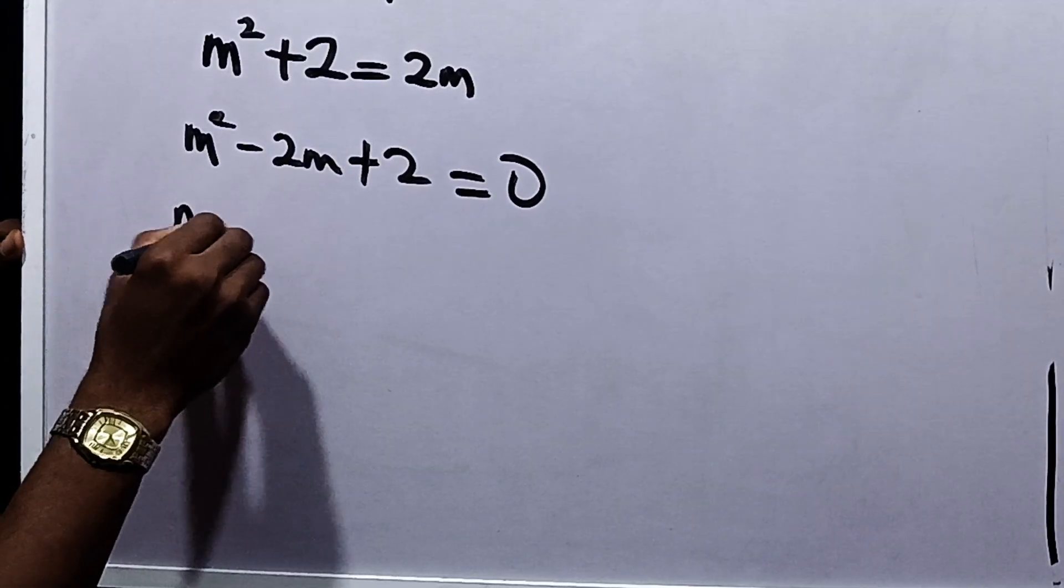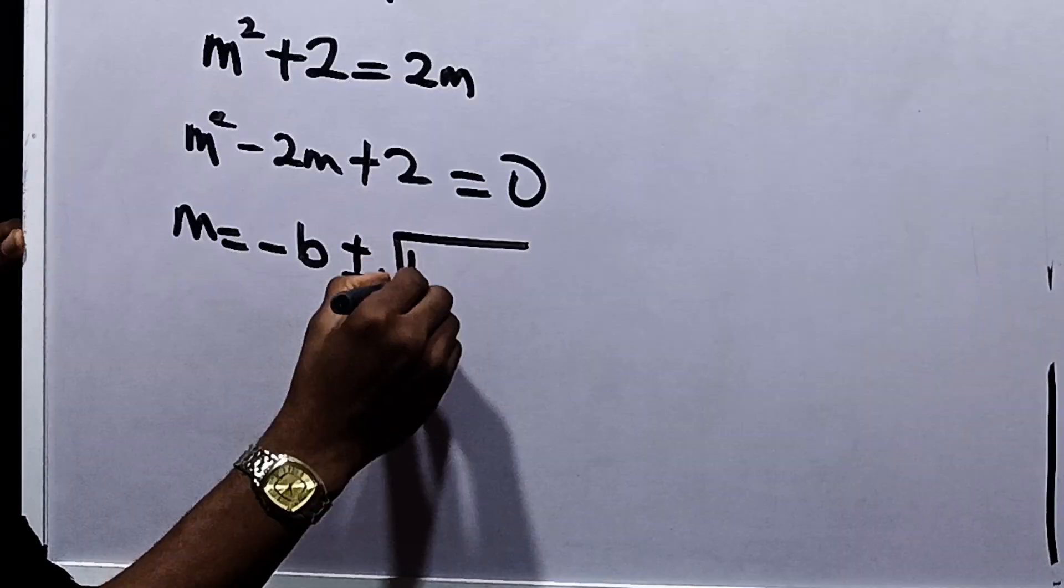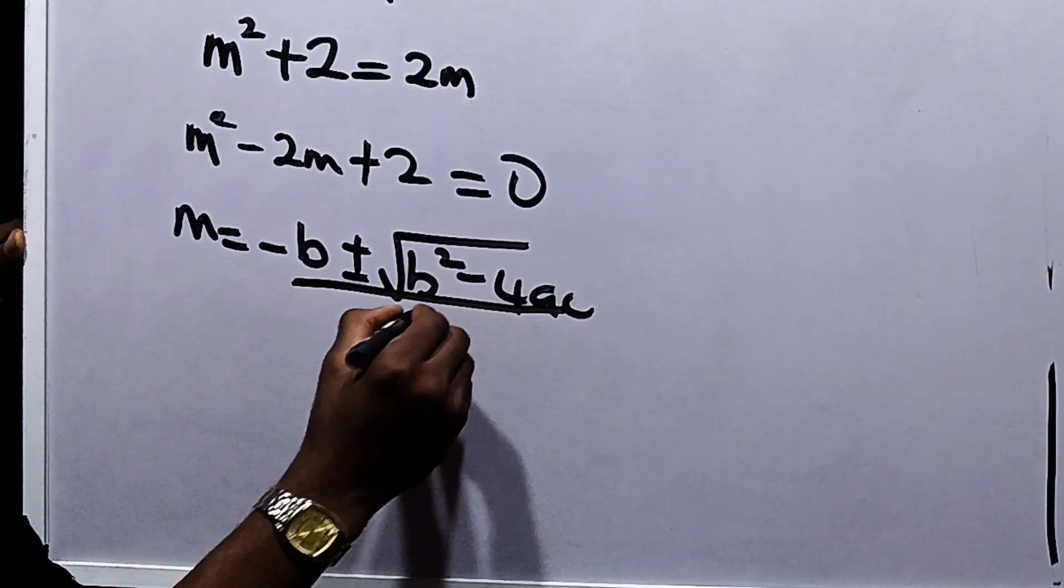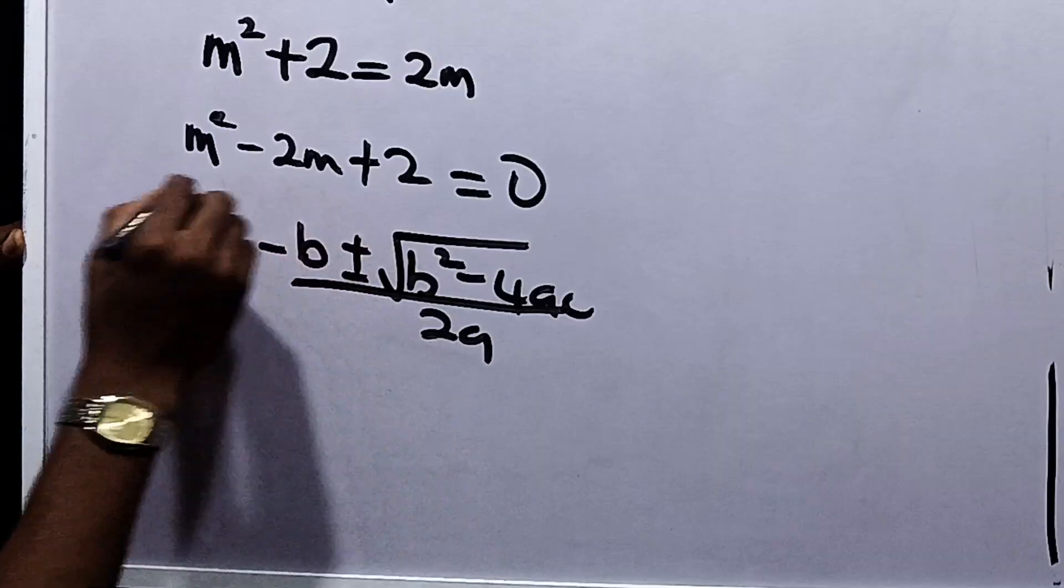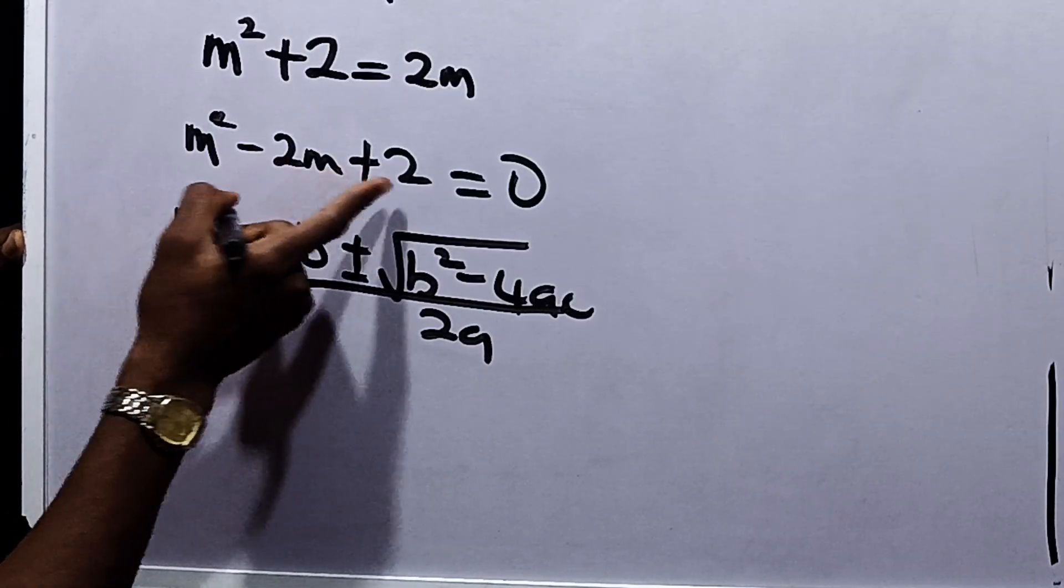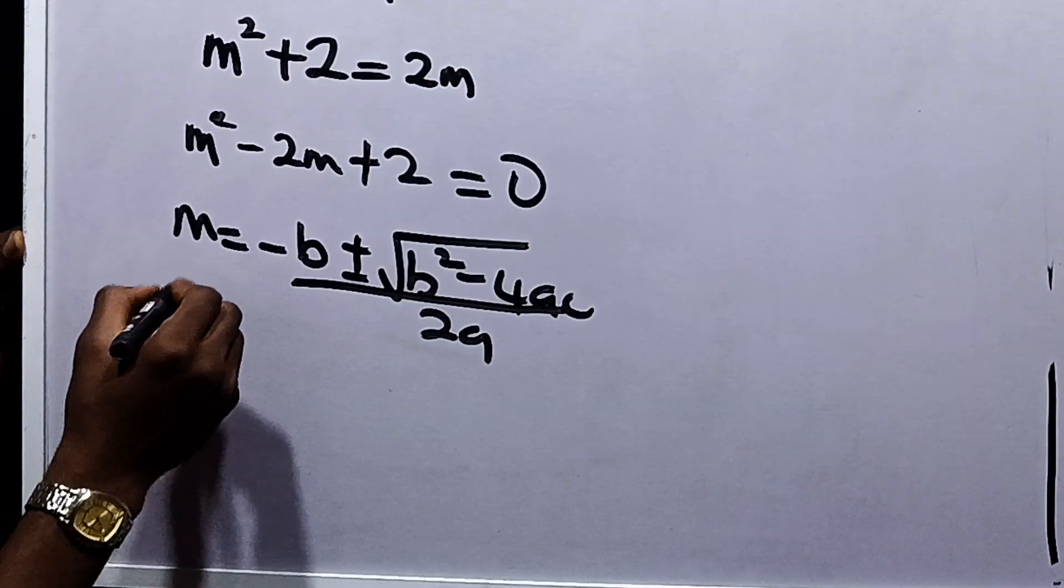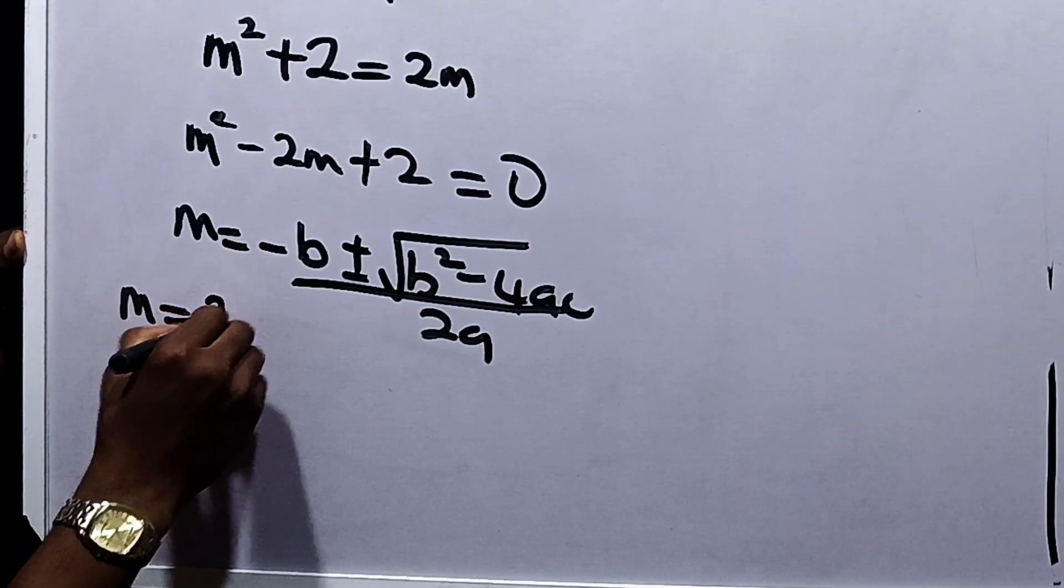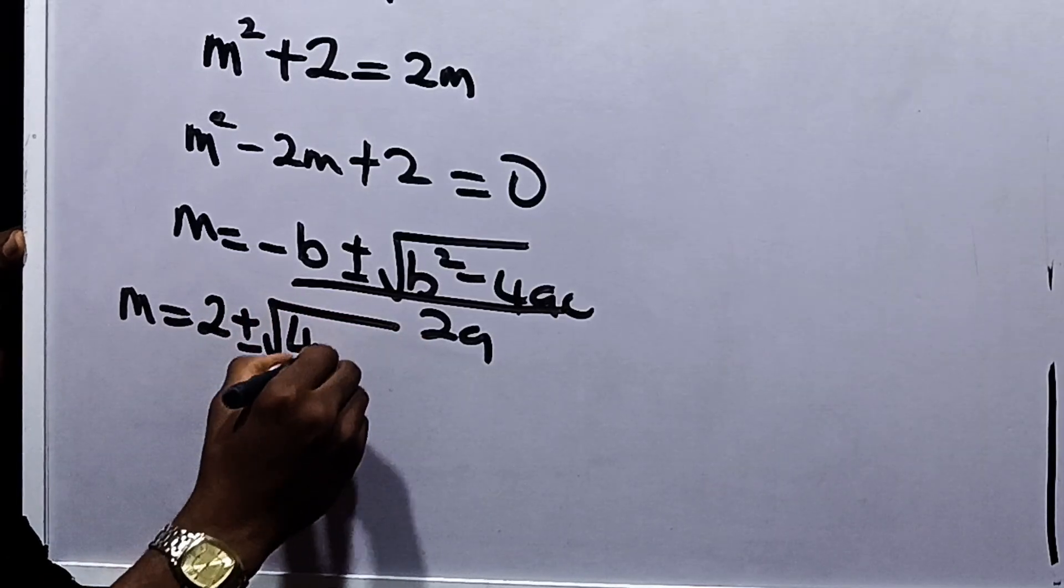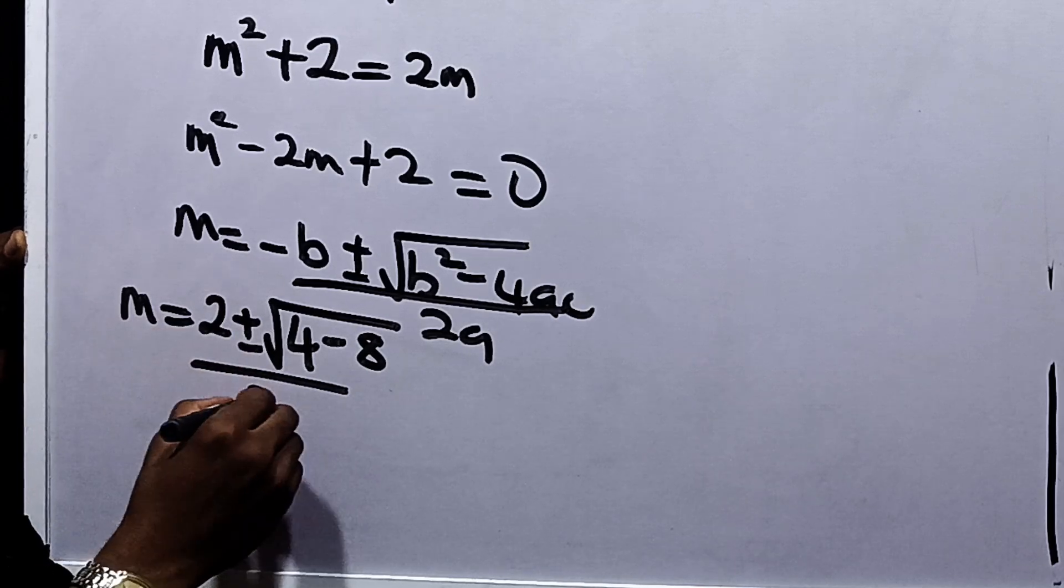The quadratic formula states that m here will be equal to minus b plus or minus square root of b squared minus 4ac all over 2a. Now, our a here is the coefficient of m squared which is 1, b is the coefficient of m which is negative 2, and c is the constant term which is 2. So we have that m here will become equal to negative 2 times minus is 2, plus or minus square root of negative 2 squared is 4, minus 4 times 2 is 8, all over 2 times 1 which is 2.